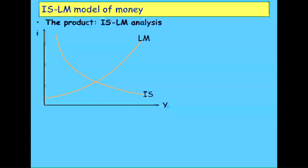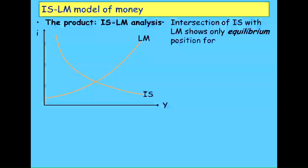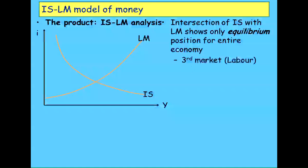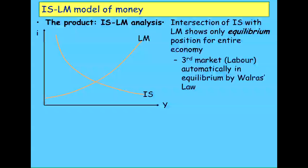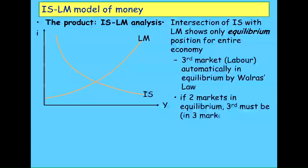The intersection of those two curves gives you overall equilibrium — the only equilibrium position for the entire economy is where the IS and LM curves intersect. There should of course be a third market for labour, but it's left out because of Walras's Law: if you have equilibrium in two markets — the goods market and the money market — then the third market must also be in equilibrium, so you can ignore it.